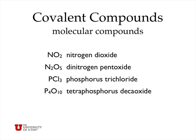Covalent compounds are typically molecular compounds formed with covalent bonds, and there are many ways of putting these together. Nitrogen dioxide uses the prefix di- to indicate two oxygen atoms and one nitrogen atom. N₂O₅ is called dinitrogen pentoxide, where pent tells us there are five oxygen atoms. Tetraphosphorus decaoxide has four phosphorus atoms and ten oxygen atoms.